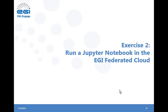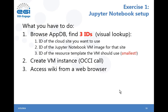Please follow the slides you downloaded from GitHub. Here's a short introduction. The first step is to go to the AppDB and find three identifiers: the ID of the Cloud site you want to use, the ID of the Jupyter Notebook virtual machine image for that site, and the ID of the resource template the VM should use. For this training, please use the smallest resource template available, since the training infrastructure has limited resources. After you get these three IDs, you can create the virtual machine instance with the OCCI client, and finally access the Jupyter Notebook from a web browser.